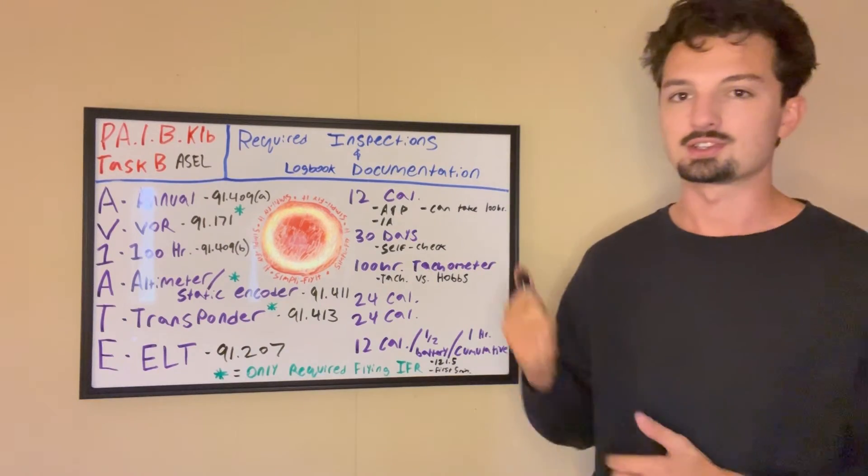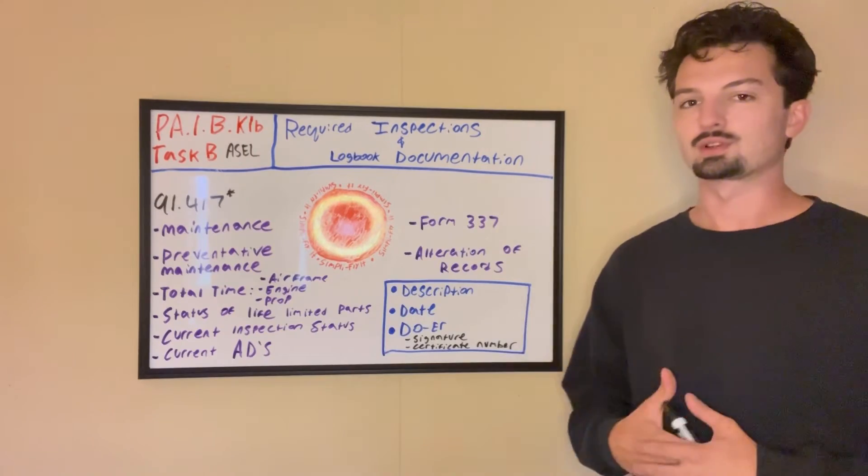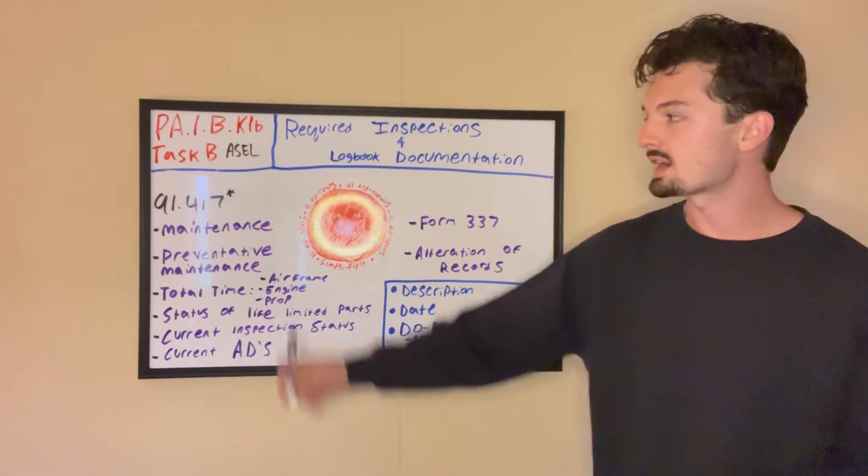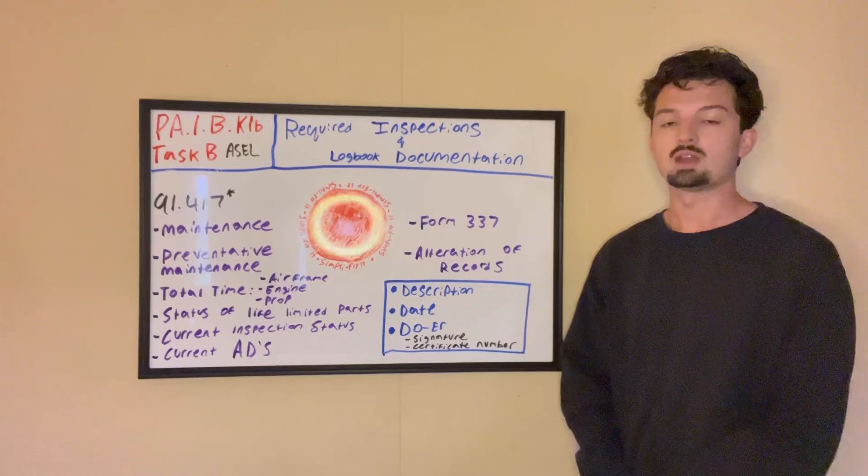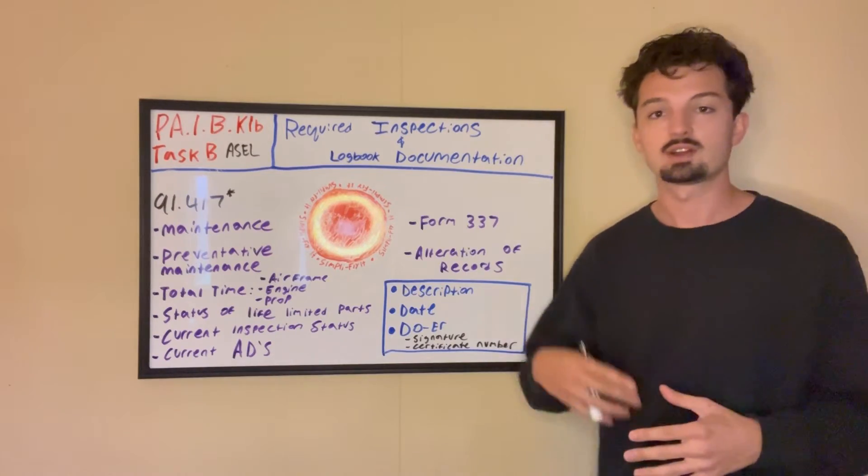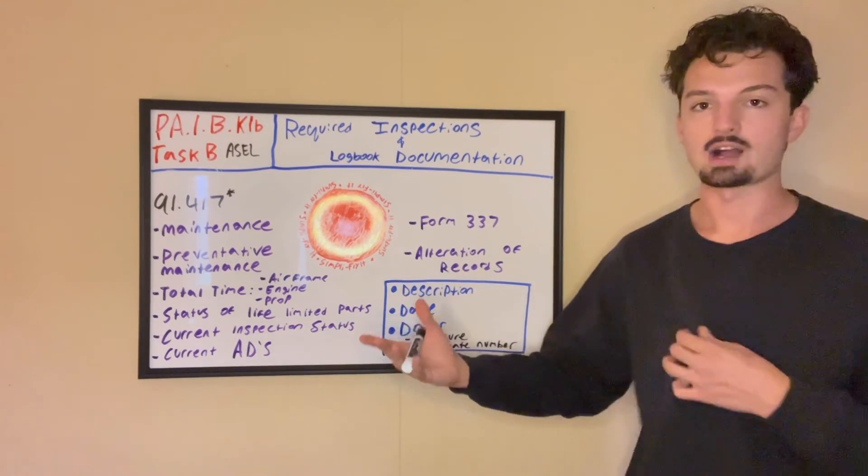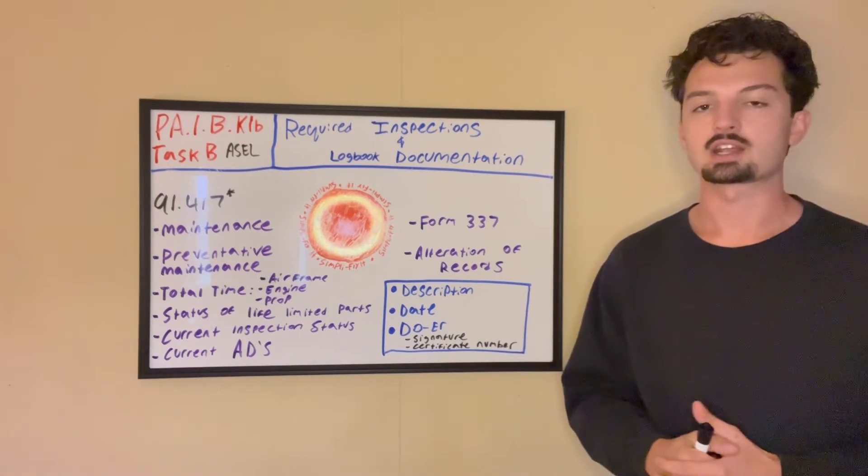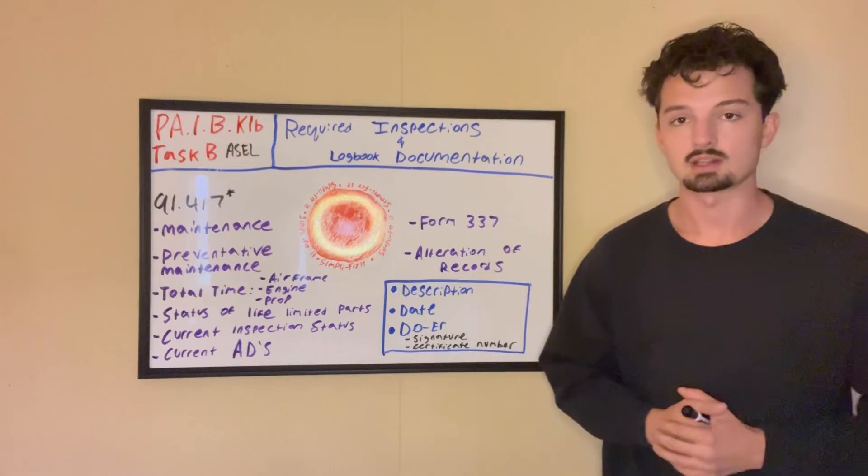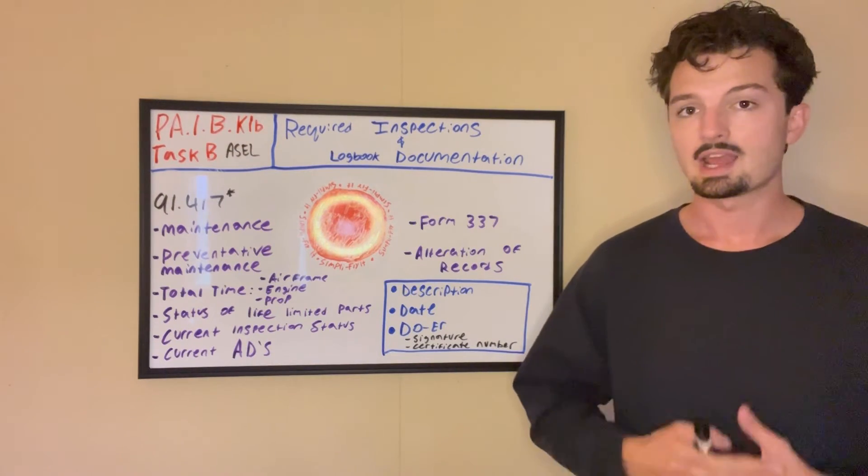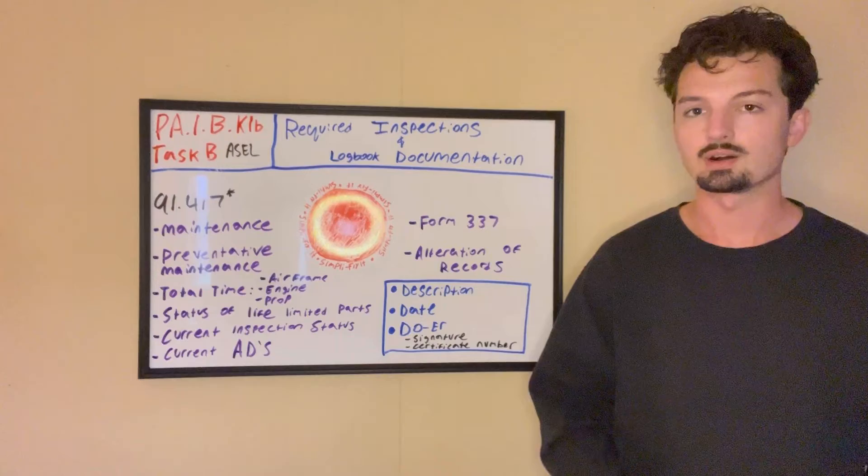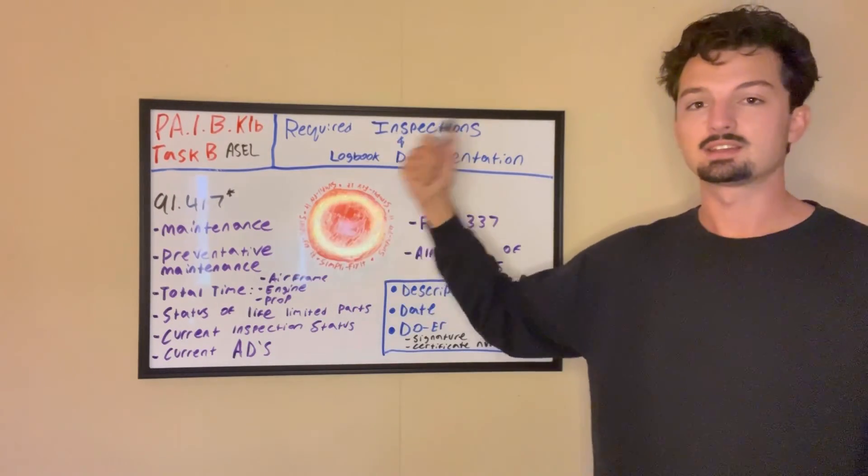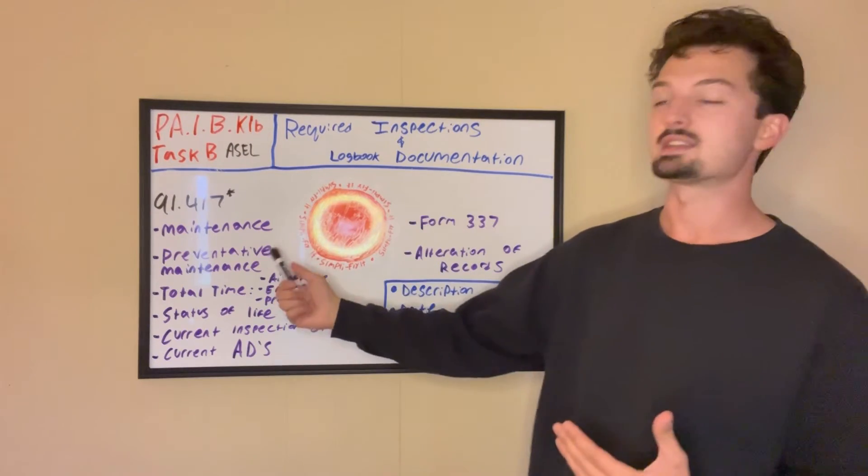Next is logbook documentation. We're back for logbook documentation. There's one regulation that covers the entire subject and that's 91-417. What this regulation states is that for all the inspections that we just talked about in AV8, anytime we do those inspections or any kind of work, we have to document it in our plane's maintenance logbook. We have to log any maintenance that gets done. This also includes any preventative maintenance done. That could be work that you do once you get your private pilot license. Say you replace some tires and change out the oil. Small things, but you still got to document those as well.